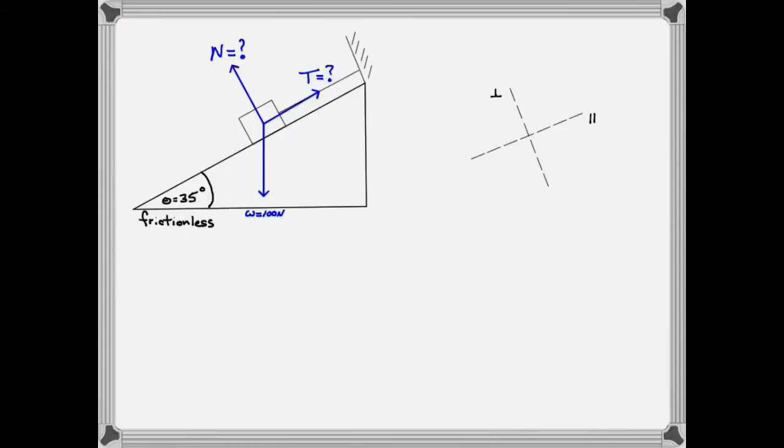This helps us in two ways. One is that now two out of the three forces are aligned with the axes, which means we have less work to do finding components. A second is that if the object was moving, its motion would be along one of the axes.